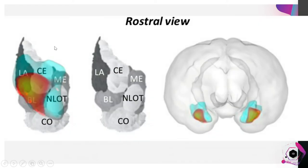Here's a picture of the amygdala in the rostral, or frontal, view of the brain, showing some of the areas that were specifically affected.